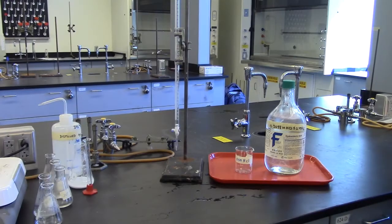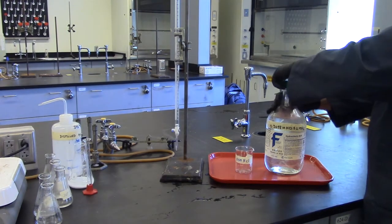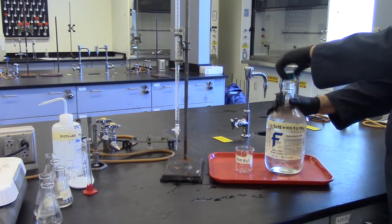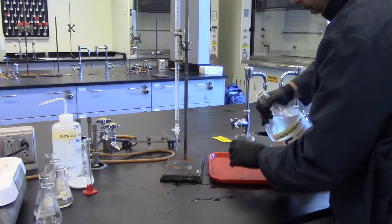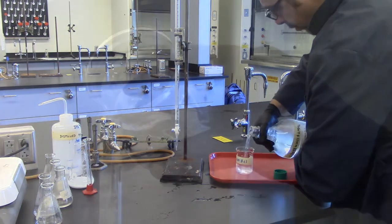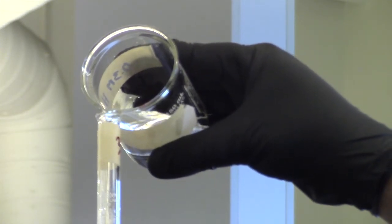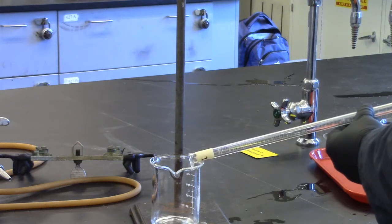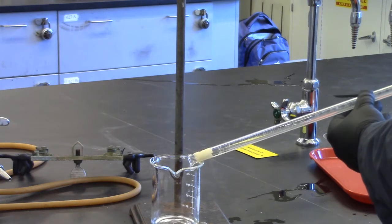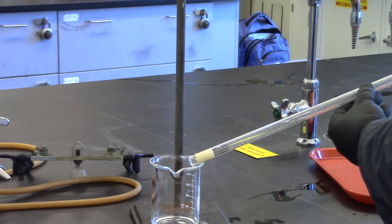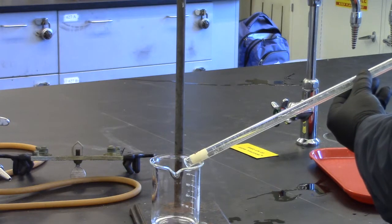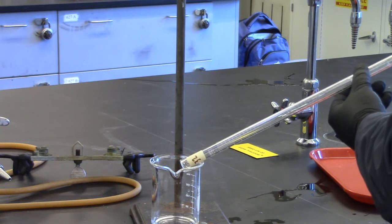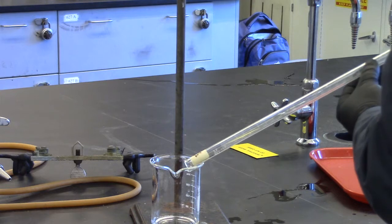We are now moving on to Part C: Titrating the borax samples. For this part, rinse a burette three times with small portions of the standardized HCl solution provided. To rinse the burette, hold the burette sideways and allow the HCl solution to wash the sides of the burette while pouring it into a beaker. Rinse the burette three times.